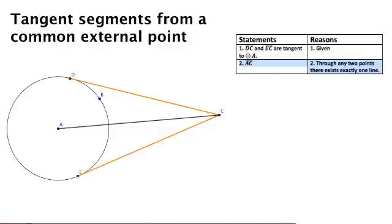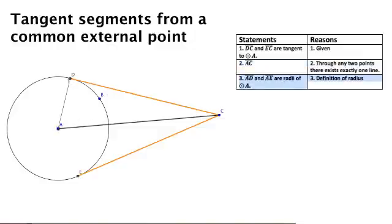Next, we're going to construct the radii that connect the center of the circle to each point of tangency. And now we've constructed two triangles.